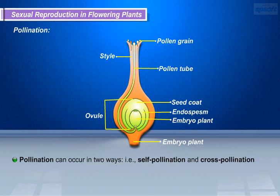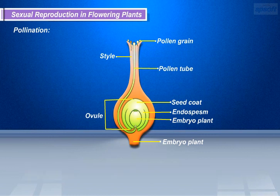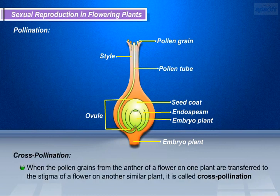Pollination can occur in two ways: self-pollination and cross-pollination. Self-pollination occurs when the pollen grains from the anther of a flower are transferred to the stigma of the same flower. Cross-pollination occurs when the pollen grains from the anther of a flower on one plant are transferred to the stigma of a flower on another similar plant.